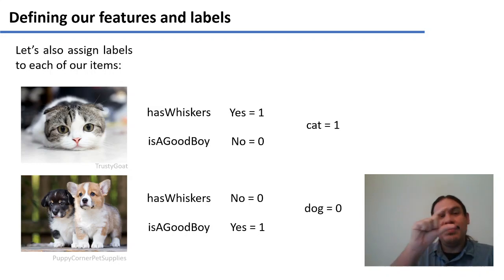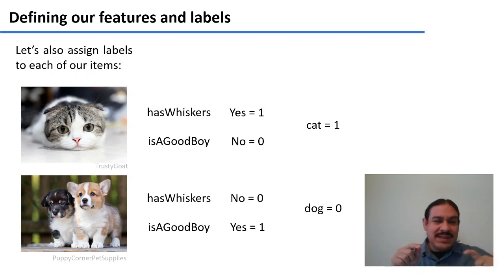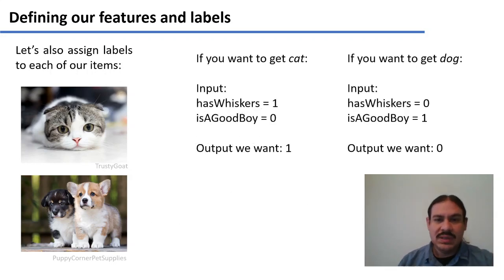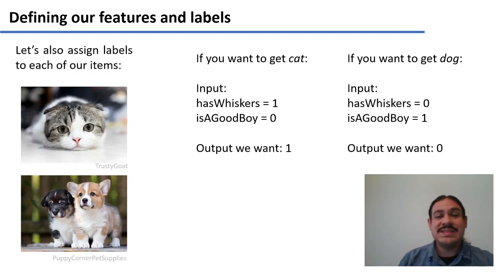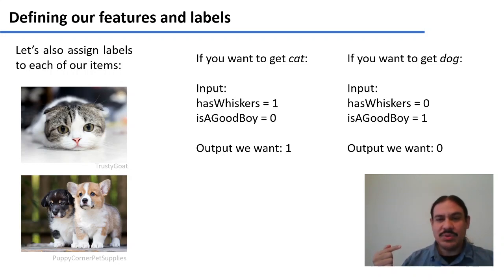We have our input, but we expect the system to transform it. We want it to transform 1, 0 into a 1 for cat, or take the features 0, 1 and transform those into a 0 for dog. Let's arbitrarily call cat 1 and dog 0 for this example. So we want an algorithm that takes 1, 0 as input and outputs 1, or takes 0, 1 and outputs 0.